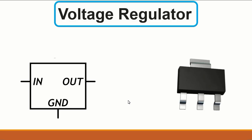Then we have the voltage regulator. This is an SMD voltage regulator with three terminals — actually four terminals, but two are connected together. This is its symbol with input, output, and ground. This component regulates voltage — for example, if you have 12 volts at the input, you can get 5 volts at the output, or 5 volts in gives 3 volts or 2 volts out.